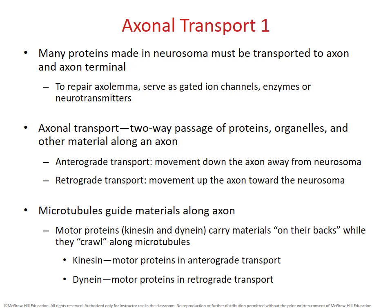Many things must be transported because the soma, the cell body, is the biosynthetic center of the cell. Proteins, organelles, various types of materials, and neurotransmitter molecules all have to be transported one way or another along the axon. This generally occurs along microtubules that run the length of the axon — they almost serve like train tracks along which materials are transported.